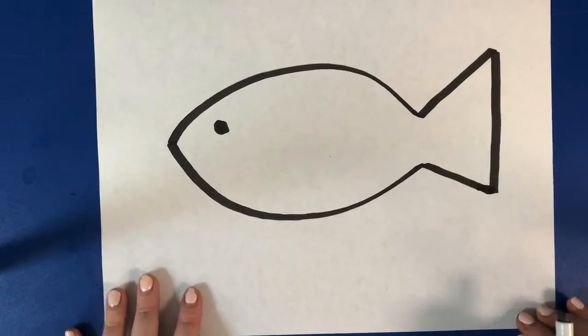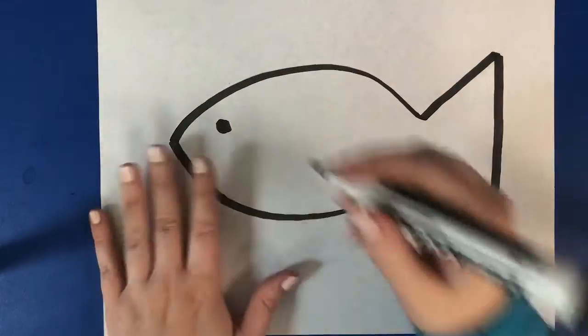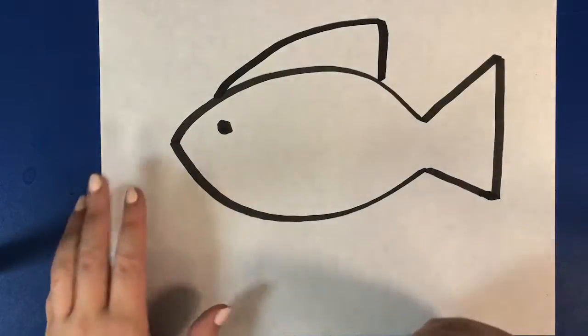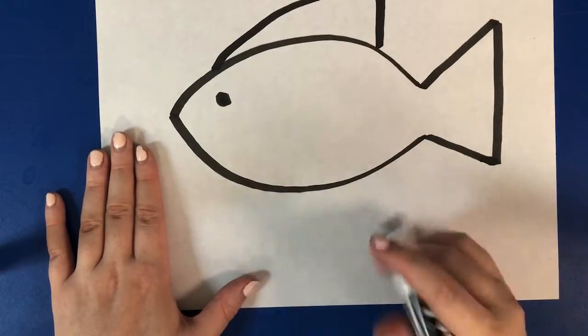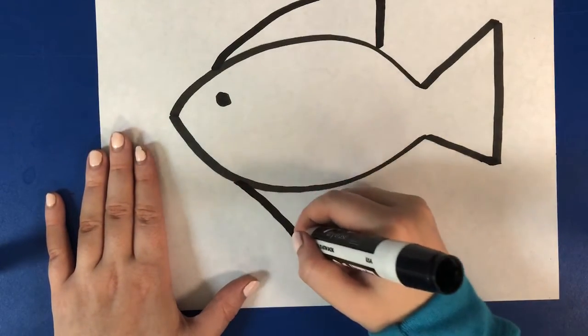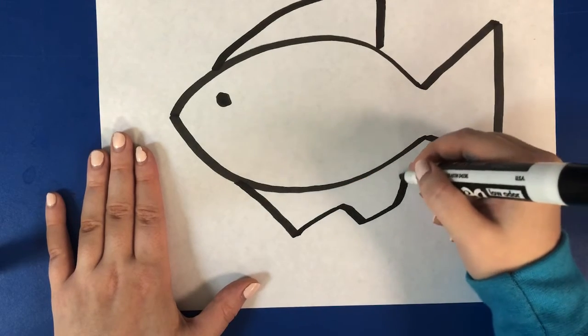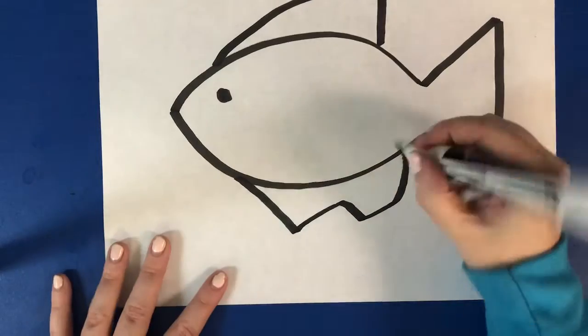Fins at the top and the bottom are gonna be a little different. The one at the top, I'm just gonna curve up and bring it down. The one at the bottom, I'm sort of gonna make it wave a little bit, so I'm gonna curve it down and over and then down and over and up. And that's it!